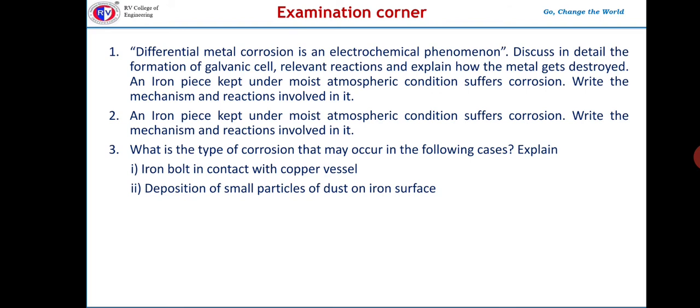Another exam question relates to types of corrosion: when two different metals are present, one acts as the anode and one as the cathode depending on their positions in the electrochemical series. A further sub-question on differential aeration corrosion asks students to identify the anode and the cathode.